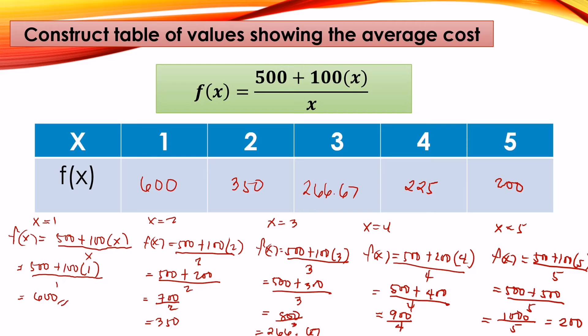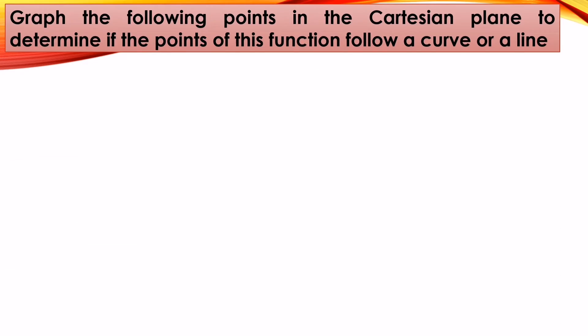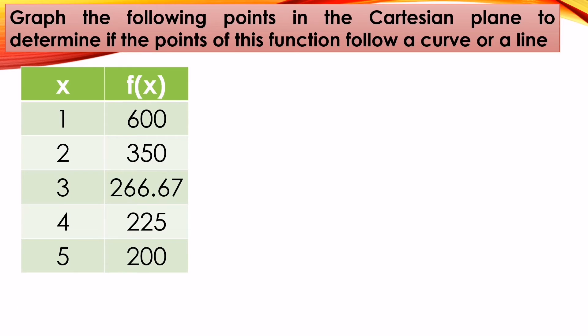After constructing the table of values, we can graph on our Cartesian coordinate plane to identify whether the points follow a curve or a line. Our table of values: x = 1, f(x) = 600; x = 2, f(x) = 350; x = 3, f(x) = 266.67; x = 4, f(x) = 225; x = 5, f(x) = 200.